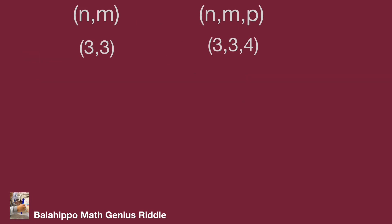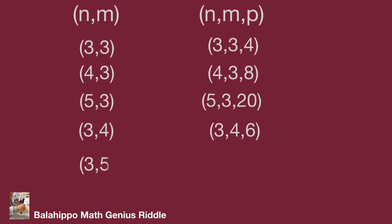Same operation, we generate m, n number group 4, 3, then get n, m, p is 4, 3, 8. 5, 3 get 5, 3, 20. 3, 4 get 3, 4, 6. 3, 5 get 3, 5, 12.